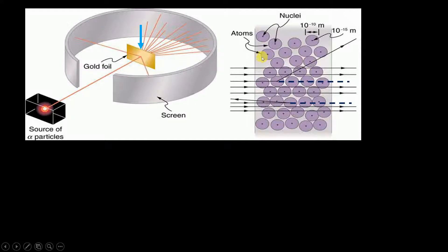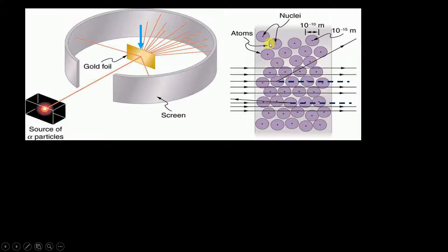This top edge appears broad for us because we are viewing with the help of a microscope. This thin edge is what is represented in the diagram. Also, I want to make clear that many of you might have a misconception that atoms are circular in shape — no, atoms are spherical in shape. This diagram is a top view of the thin edge, and since we are viewing with a microscope, it appears broad. Atoms are spherical in shape.